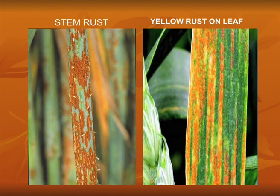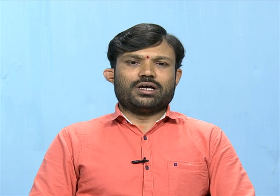Puccinia cells form a multicellular, mycelial organism. The mycelia are formed by a group of intercellular hyphae. The cell wall is made up of chitin and glucan materials. The plants infected by Puccinia are mainly wheat and barberry.